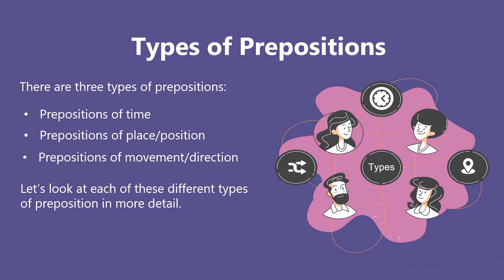There are three types of prepositions: prepositions of time, prepositions of place or position, and prepositions of movement or direction. Let us look at each of these different types in more detail.